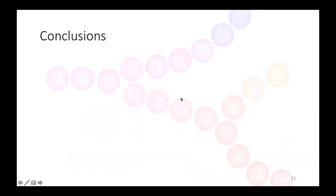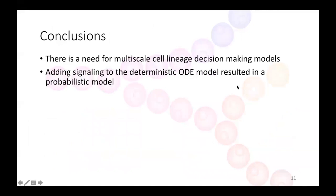So conclusions from this talk today. First is that there is a need for multi-scale cell lineage decision-making models. Second was that by adding signaling to our deterministic ODE model, we obtained a probabilistic model with respect to cell fate.